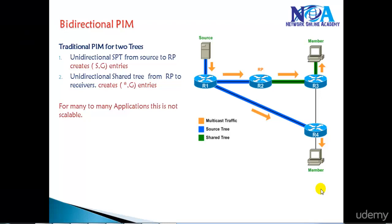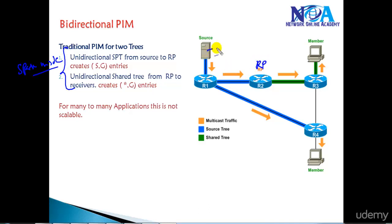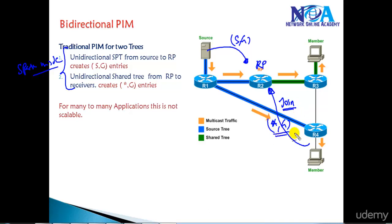Bidirectional PIM is a feature we can say is an extension to the PIM sparse mode concept which allows only shared tree inside your multicast domain. Before we get into the details of Bidirectional PIM, let's review how default sparse mode works. In sparse mode we configure something called a Rendezvous Point (RP), where every source has to register themselves with S,G entries. If you have a receiver, it is going to send join messages and all the downstream routers will maintain an entry called star comma G, where they want to receive the multicast from any source for this particular group address.